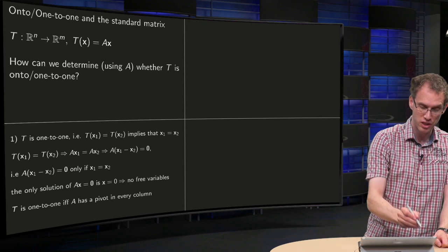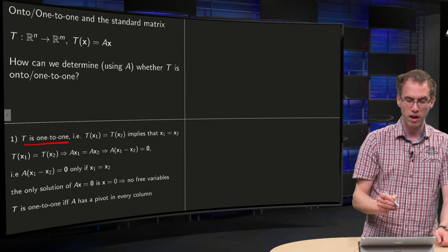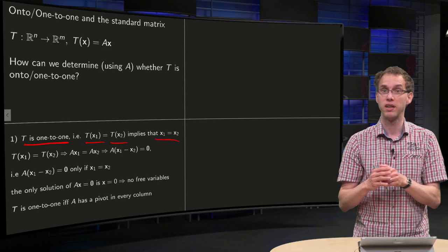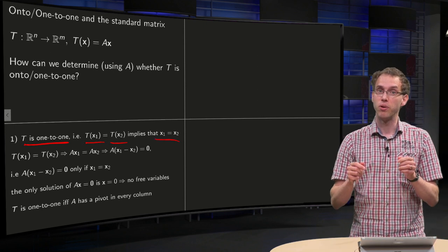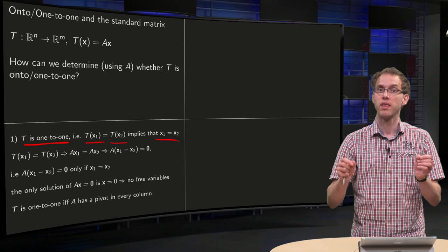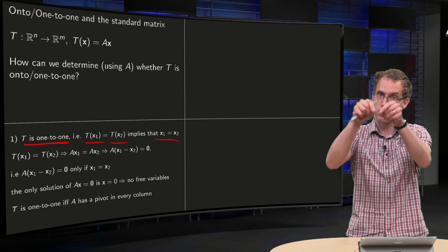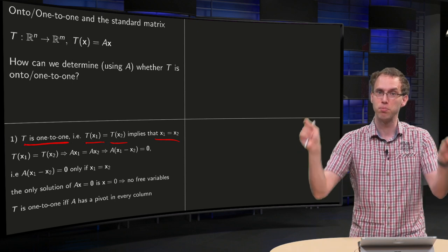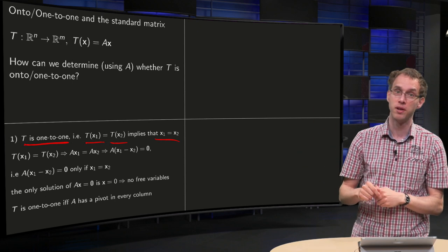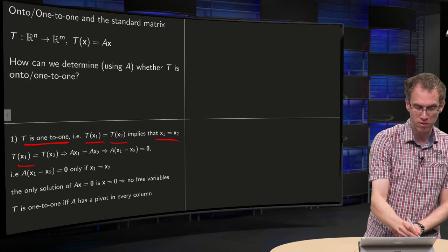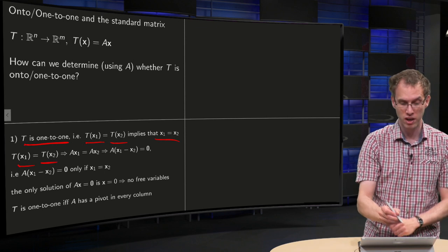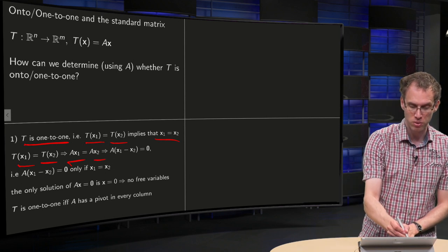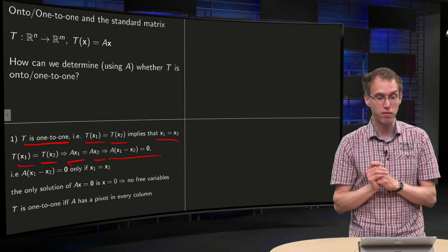Well, the transformation T is one-to-one if T(X1) equals T(X2) implies that X1 equals X2. Then you can simplify that to A times (X1 minus X2) equals the zero vector.